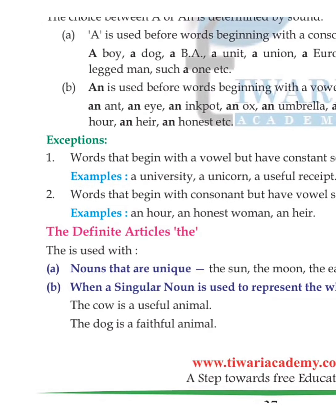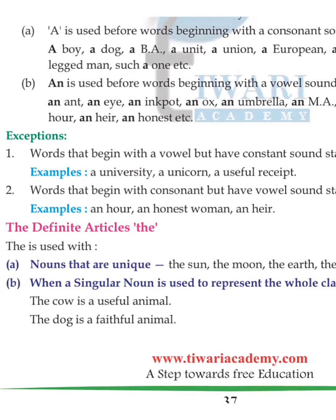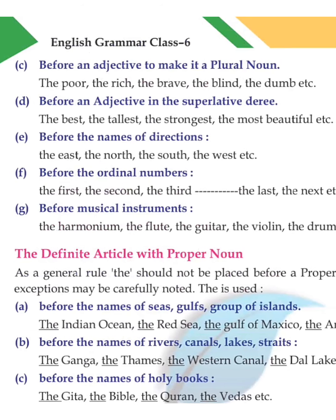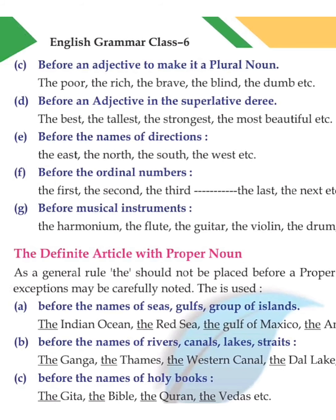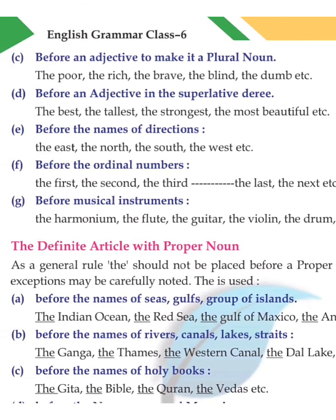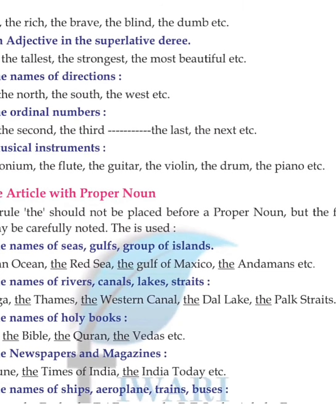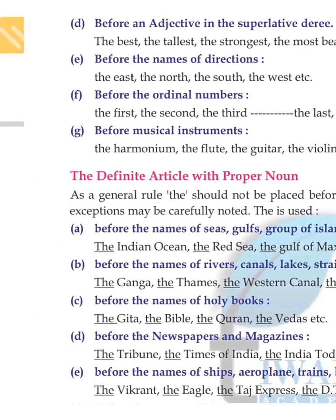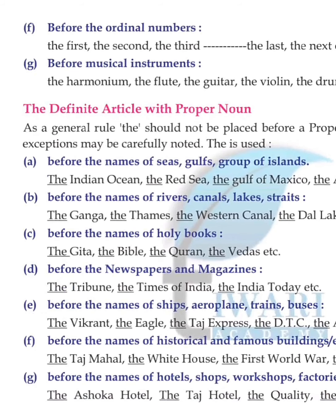'The' is used before an adjective to make it represent a plural noun: the poor, the rich, the brave, the blind, the dumb. It is used before adjectives in the superlative degree: the best, the tallest, the strongest, the most beautiful. Also before names of directions: the east, the north, the south, the west. And before ordinal numbers: the second, the third, the last, the next.